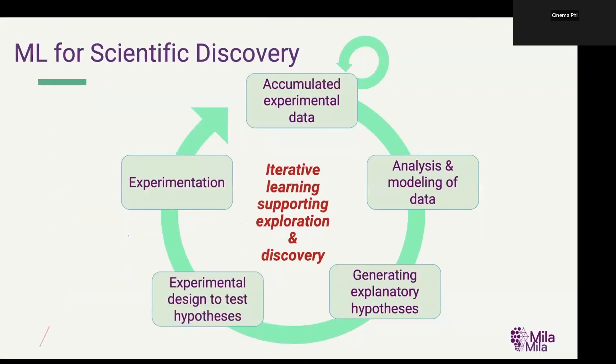It's good to see how that fits in the bigger picture of scientific discovery. We accumulate experimental data, we analyze it, we try to model it. From that kind of unsupervised analysis of the data, we then generate explanatory hypotheses about how this could work. The emphasis is on hypotheses, plural, because there may be multiple interpretations of the data. We have to take into account the uncertainty about the right explanation for that data to drive the next step, which is to design experiments for the next round.